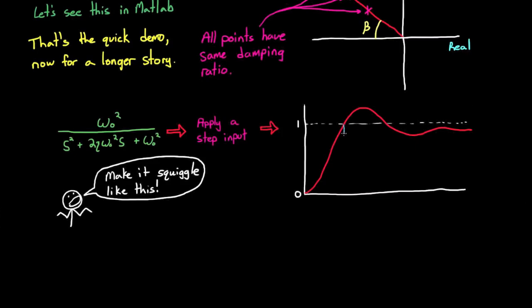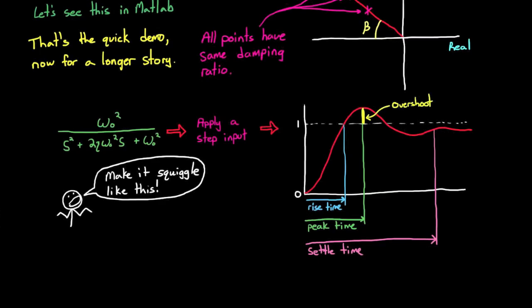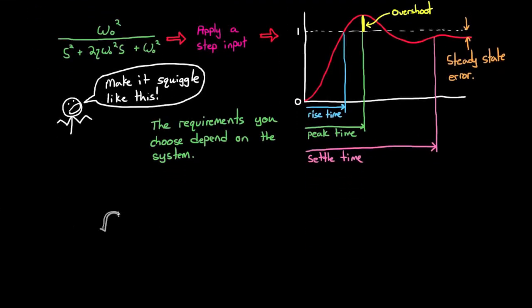If you wanted to describe the performance of this response, you could say, well, it starts at 0 and then goes up kind of fast and then squiggles back and forth a bit around 1. Or to be a little more accurate, you could describe the performance of this response with metrics like the time it takes to rise, the time of its peak value, the time it takes to settle, its overshoot expressed as a percentage, and its steady-state error.